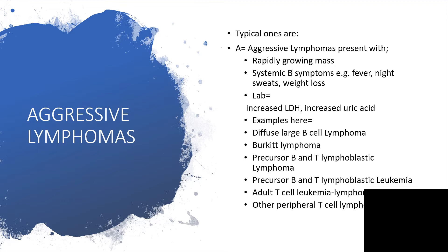Examples of aggressive lymphomas include diffuse large B-cell lymphoma, Burkitt lymphoma, B or T lymphoblastic lymphoma, B or T lymphoblastic leukemia, adult T-cell leukemia, and other peripheral T-cell lymphomas.